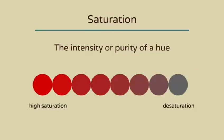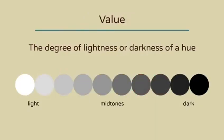Saturation refers to the intensity or purity of a hue. High saturation means the color is really bright, and desaturation means the color looks washed out or grayed out. Value refers to the degree of lightness or darkness of a hue.